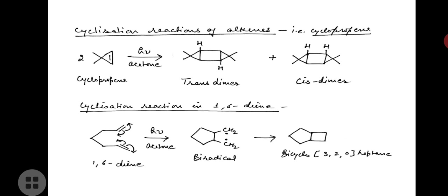Next is the cyclization reaction of alkenes using cyclopropene as an example. Cyclopropene in the presence of acetone undergoes acetone-sensitized dimerization, forming two dimers: a trans dimer and a cis dimer. One more example is the cyclization reaction of 1,6-diene. As shown by the arrows, acetone-sensitized cyclization takes place, a bi-radical is formed, and cyclization of the bi-radical yields the product.